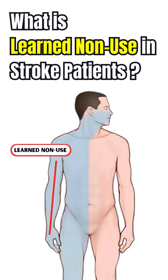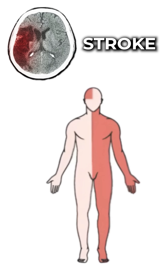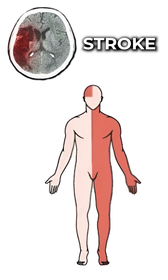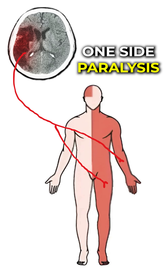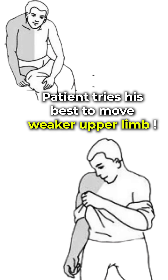What is learned non-use and how does it develop? Whenever an individual suffers from a neurological insult to the brain such as stroke, which results in one side becoming weaker than the other, then immediately following such an episode...